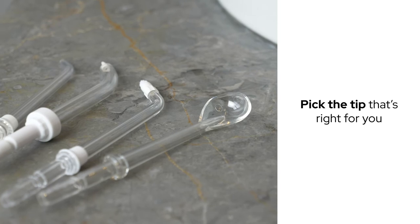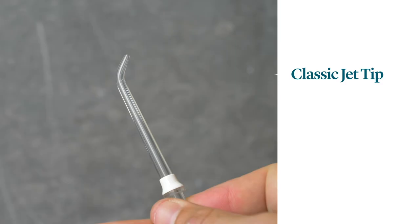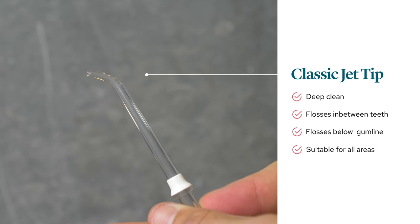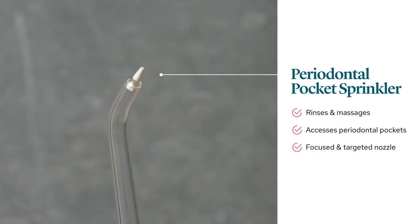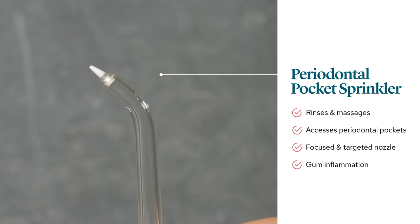The next thing is to pick the tip that's right for you. The first tip is the classic tip, suitable for almost all areas. The periodontal tip has a more focused and targeted nozzle, and it's really good if you have a known area of gum inflammation.